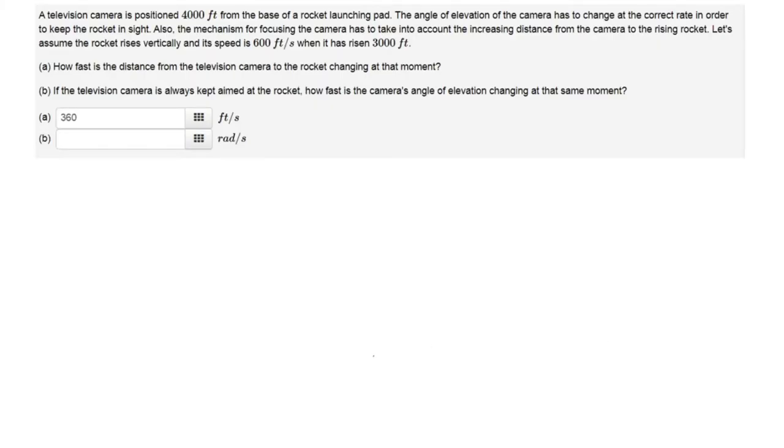We're given a television camera positioned 400 feet from the base of a rocket launching pad. So this is the camera, this is 4,000 feet. The angle of elevation the camera has to change, we'll call this the angle of elevation theta, to keep the rocket in sight. Let this be the height of the rocket and we'll call X the distance between the rocket and the camera.